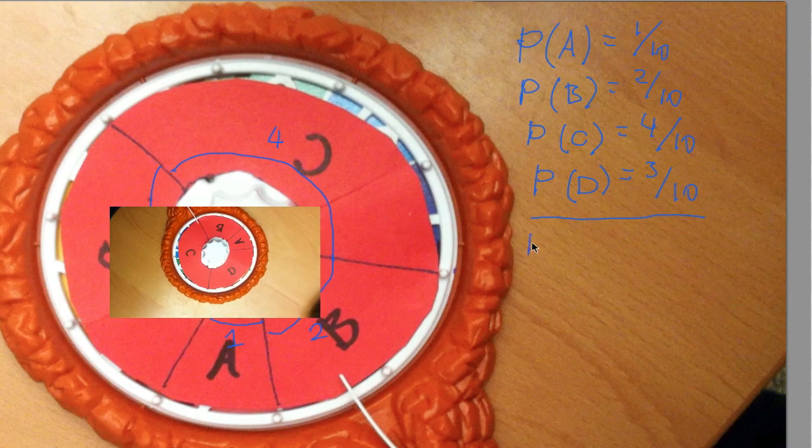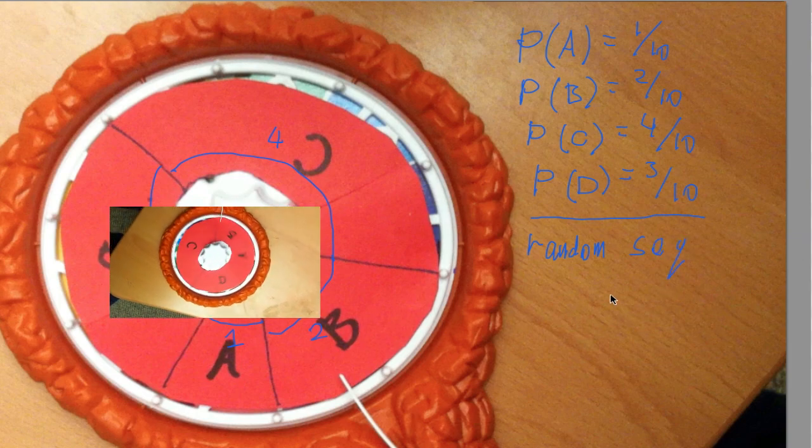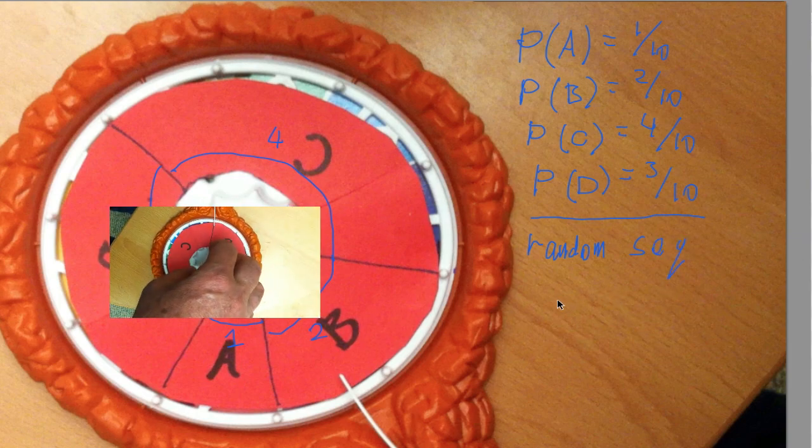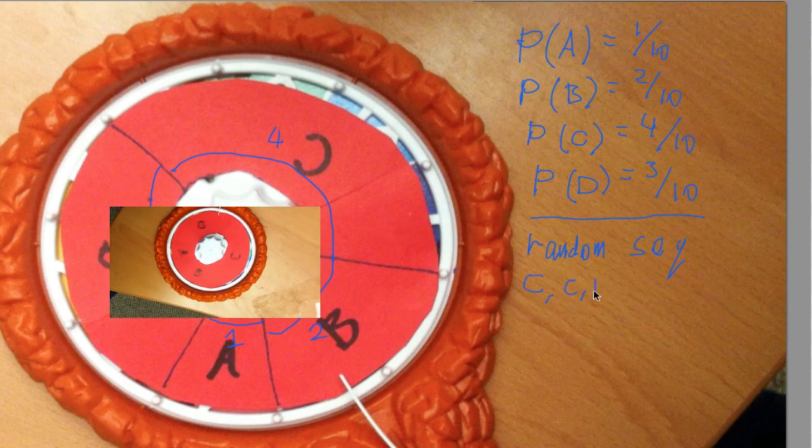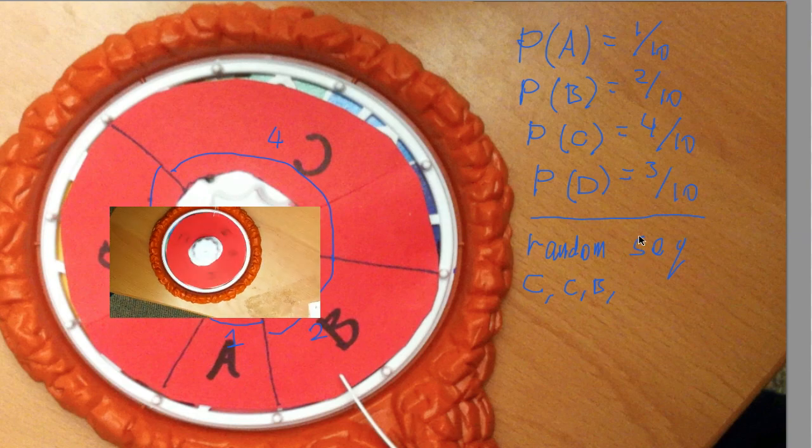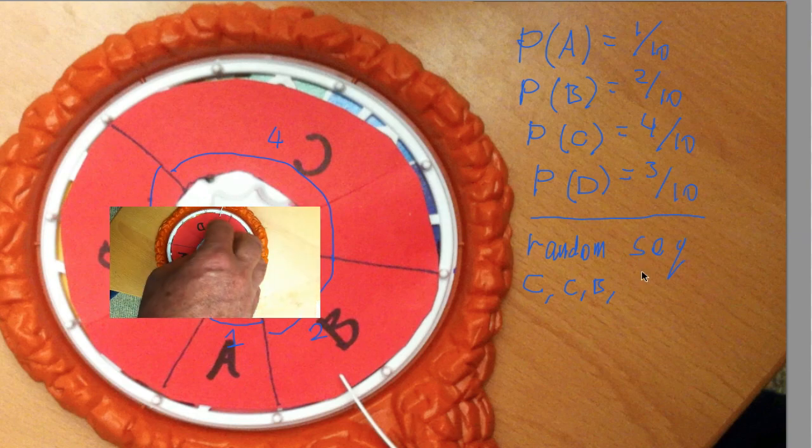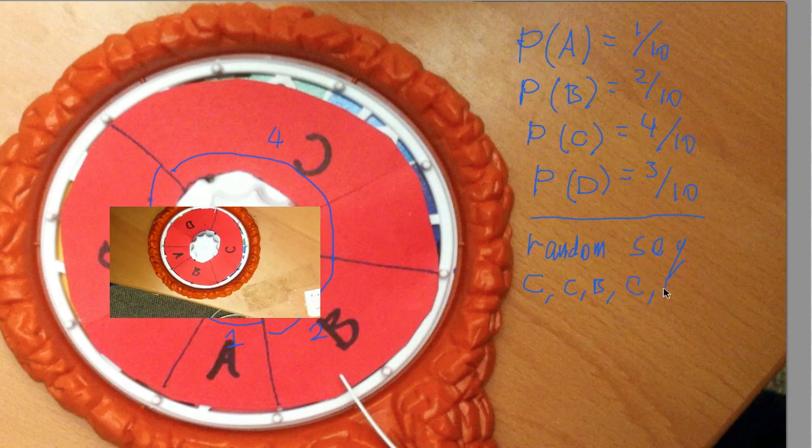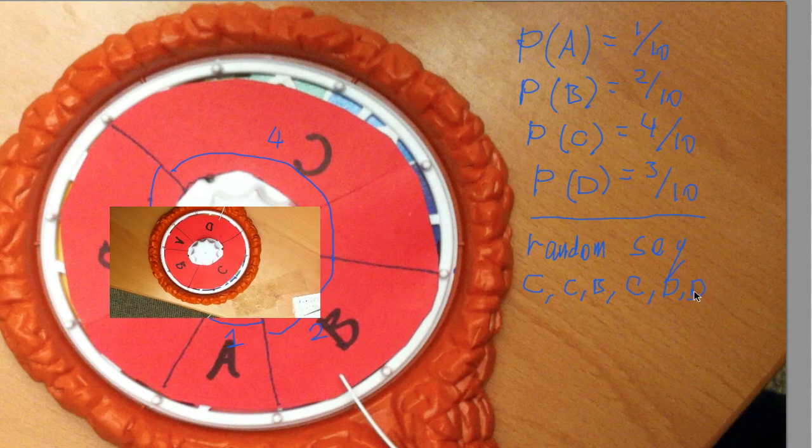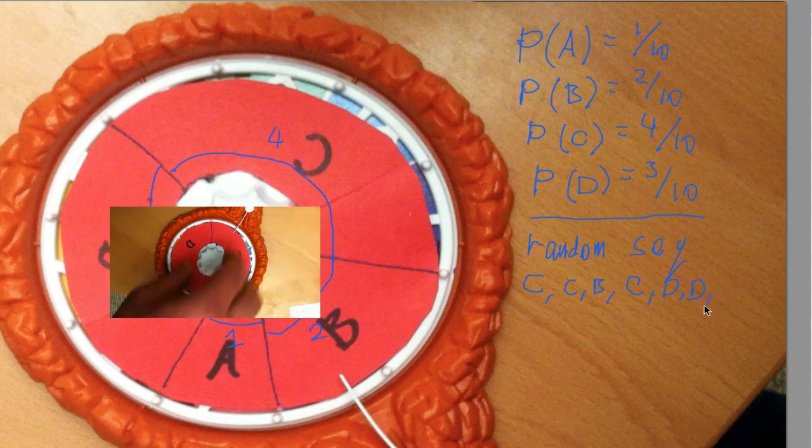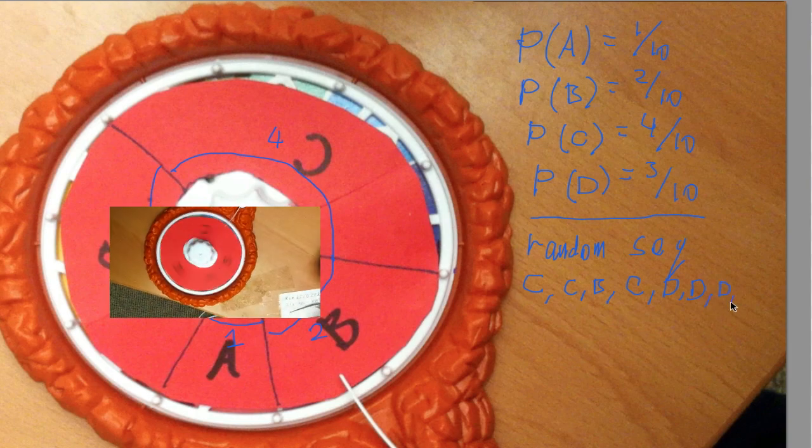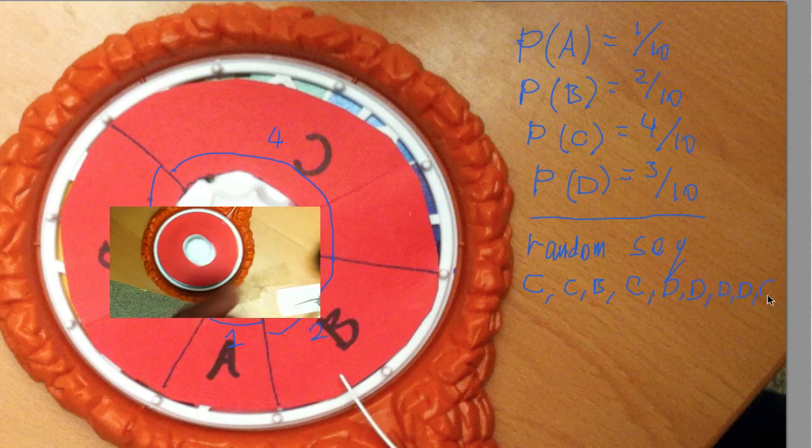But okay, now let's assume that we are starting to spin the wheel, and what we get is a random sequence. And what would this random sequence be? Let's see: it's a C, C, B, then C, D, D, C, D, D, then D, D, C, D, D, C.